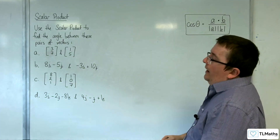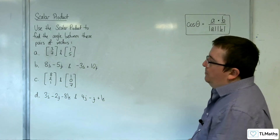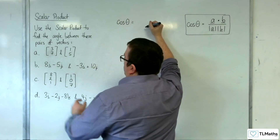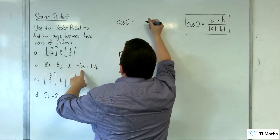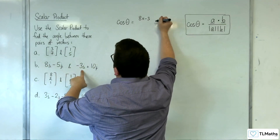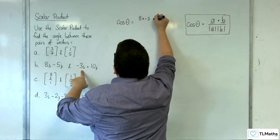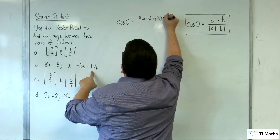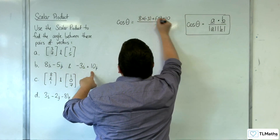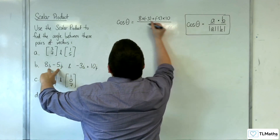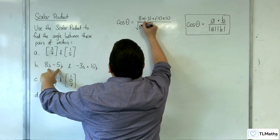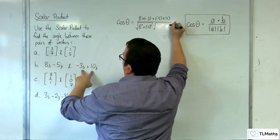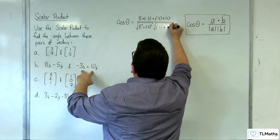So part B: vectors 8i minus 5j and minus 3i plus 10j. Cosine theta is equal to — first of all, we've got A dot B. So 8 times minus 3, plus minus 5 times 10, divided by the length of this vector. The length of that vector is the square root of 8 squared plus negative 5 squared, and the length of this vector is the square root of minus 3 squared plus 10 squared.